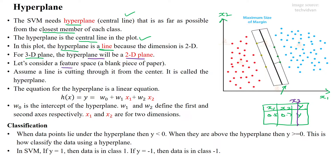Consider the feature space as a blank sheet of paper. If a line cuts through it from the center, that line is called the hyperplane. So if this is the piece of paper, the line cutting through the center is called the hyperplane.